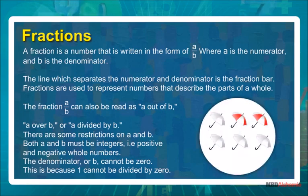A fraction is a number that is written in the form of a upon b, where a is the numerator and b is the denominator. The line which separates the numerator and denominator is the fraction bar. Fractions are used to represent numbers that describe the parts of a whole.